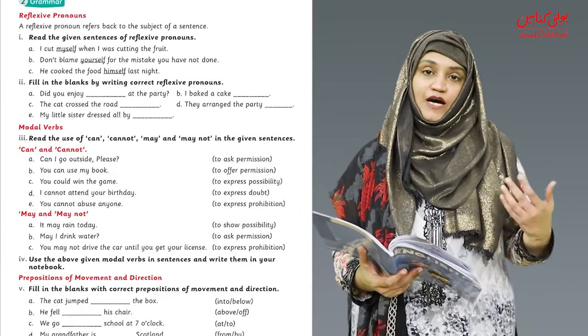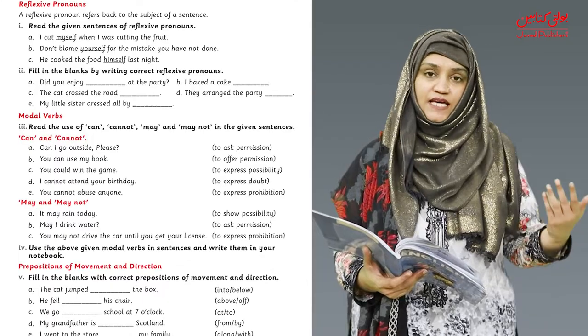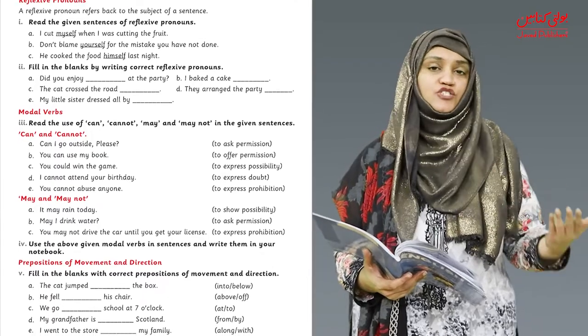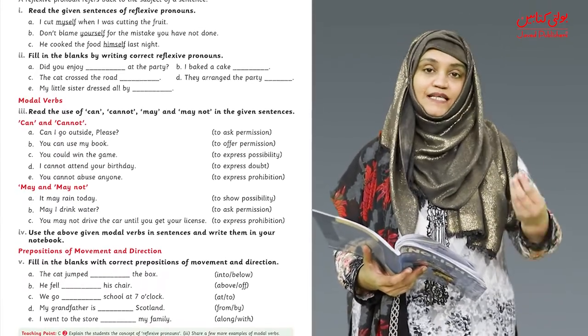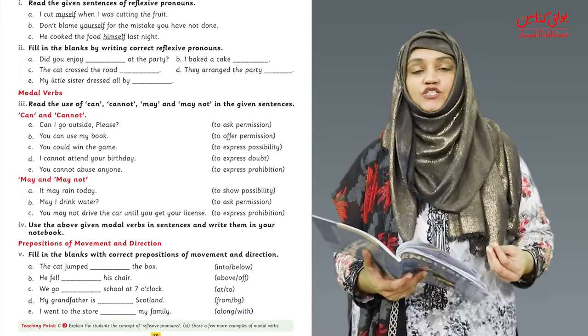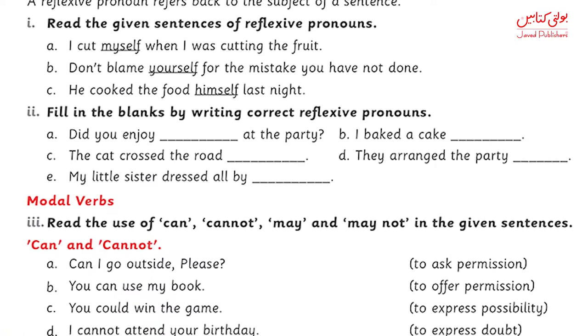Ismeh noun mein aapke paas person, animal, thing — kisi bhi chiz ko aap noun kerte hai. So anything that talks about the subject of the sentence is a reflexive pronoun. For example, aapke paas words hai: myself, yourself, himself — ye sare words reflexive pronouns hai.